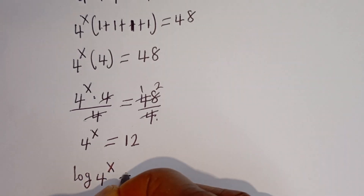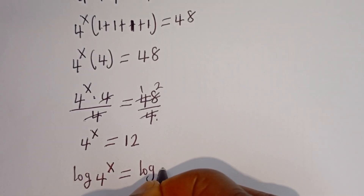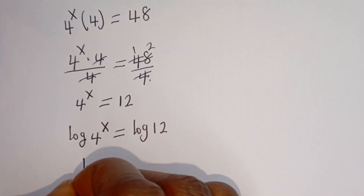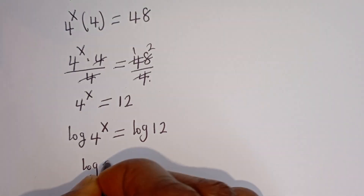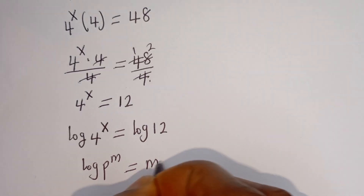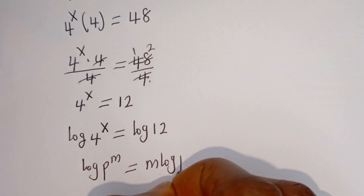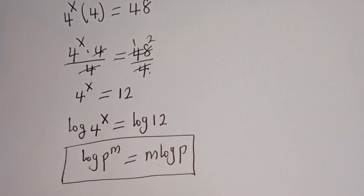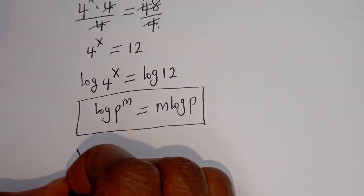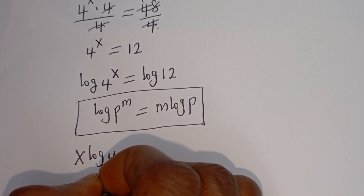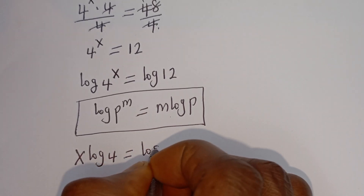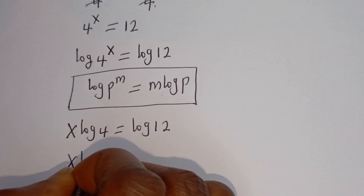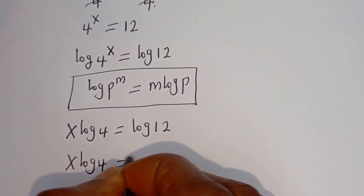Now let's take the log of both sides. We have log of 4 to the power of S is equal to log 12. Take note that if you have log P to the power of M, this is equal to M times log P. Then this can be rewritten as S times log 4 is equal to log 12.